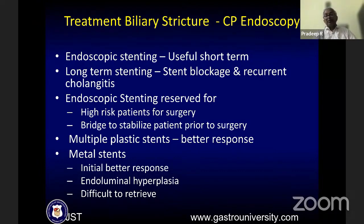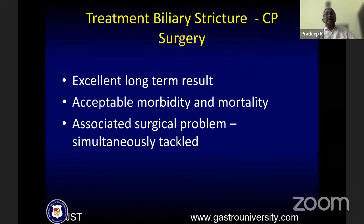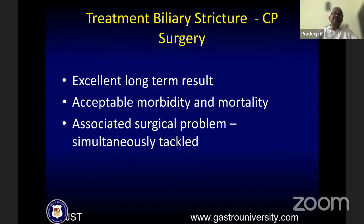If stenting is done, multiple plastic stents are better. Metal stents have an initial better response but are difficult to retrieve when surgery is required. Long-term success of self-expanding metallic stents is better than plastic stents, but still not great overall. Surgery for biliary strictures has excellent long-term results with acceptable mortality and morbidity, and associated surgical problems can be simultaneously tackled.